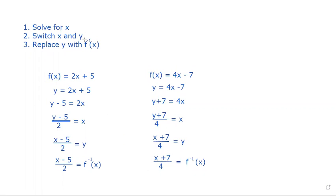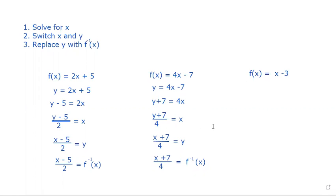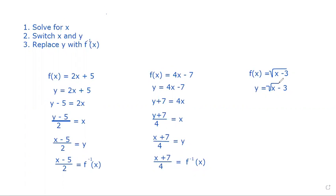I want us to look at one more — a square root example. Here we have f(x) = √(x minus 3). I'm going to rewrite this as y = √(x minus 3). The object is to solve for x — get x by itself. To do that, we need to square both sides.